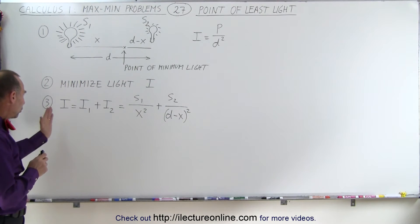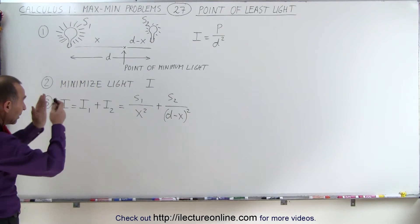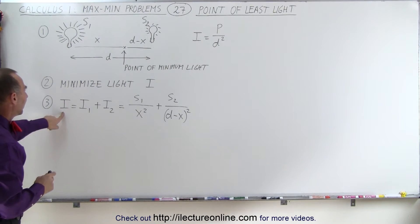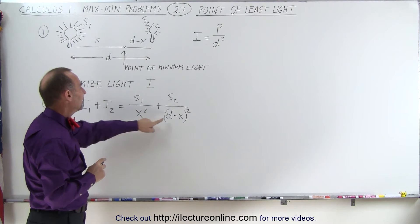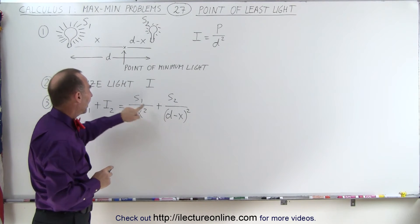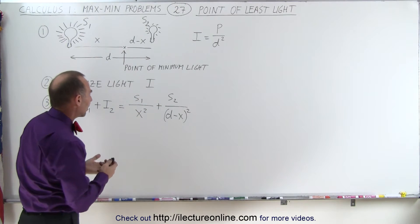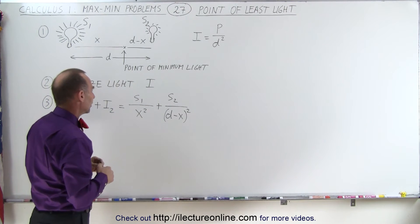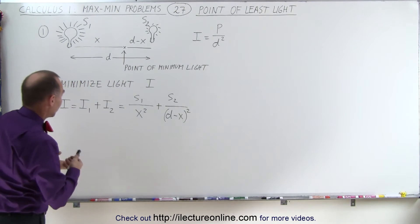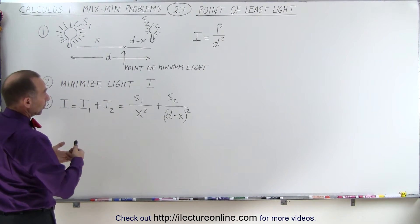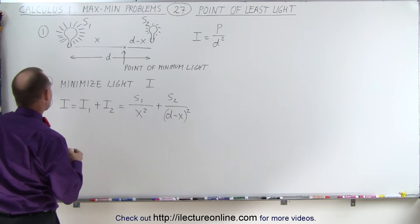Notice that the equation for the intensity at any point between the two sources is only a function of one variable, x. d is a constant, S1 is a constant, S2 is a constant, so we don't need a constraint to eliminate one of the variables. That means we can go ahead to step six and take the derivative and set it equal to zero.